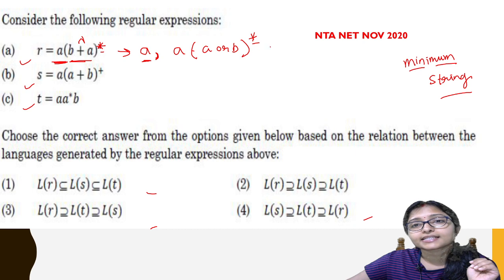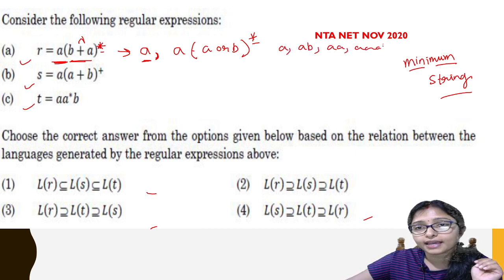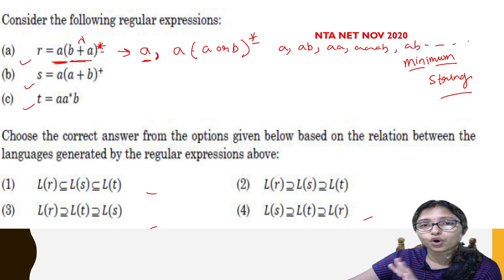So it can be A, it can be AB, it can be AA, it can be AAB, it can be ABA, AB, and so on.